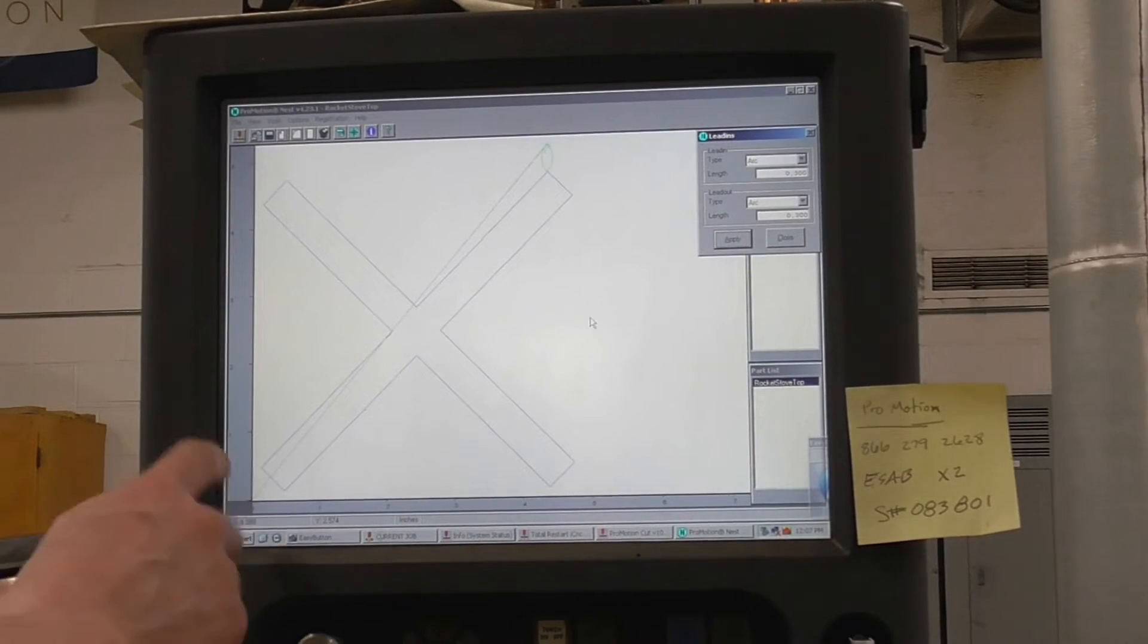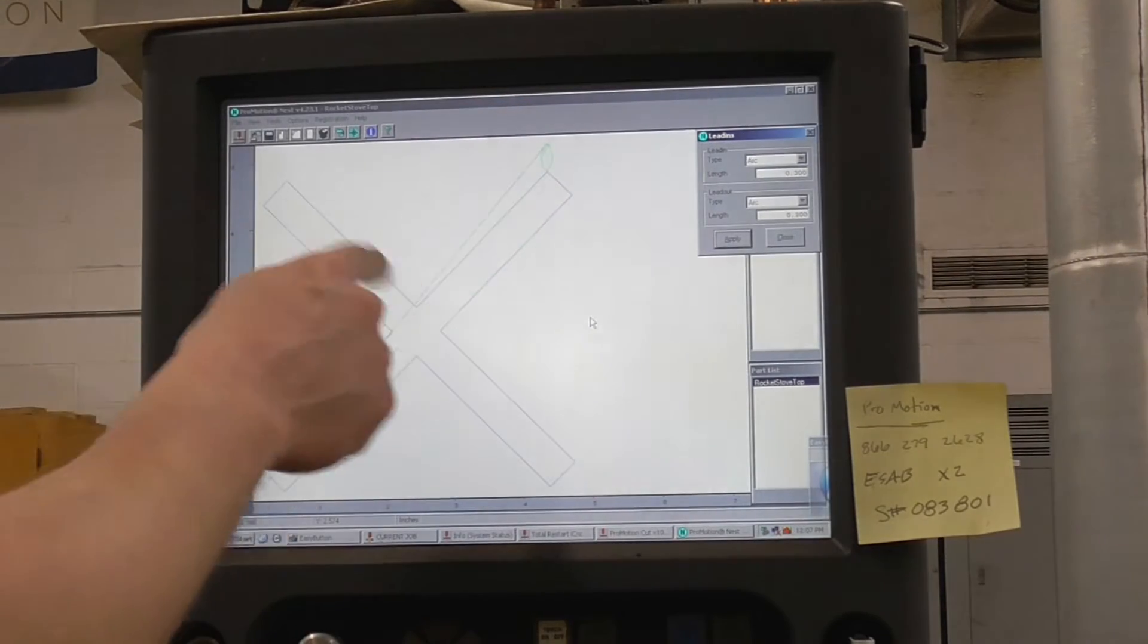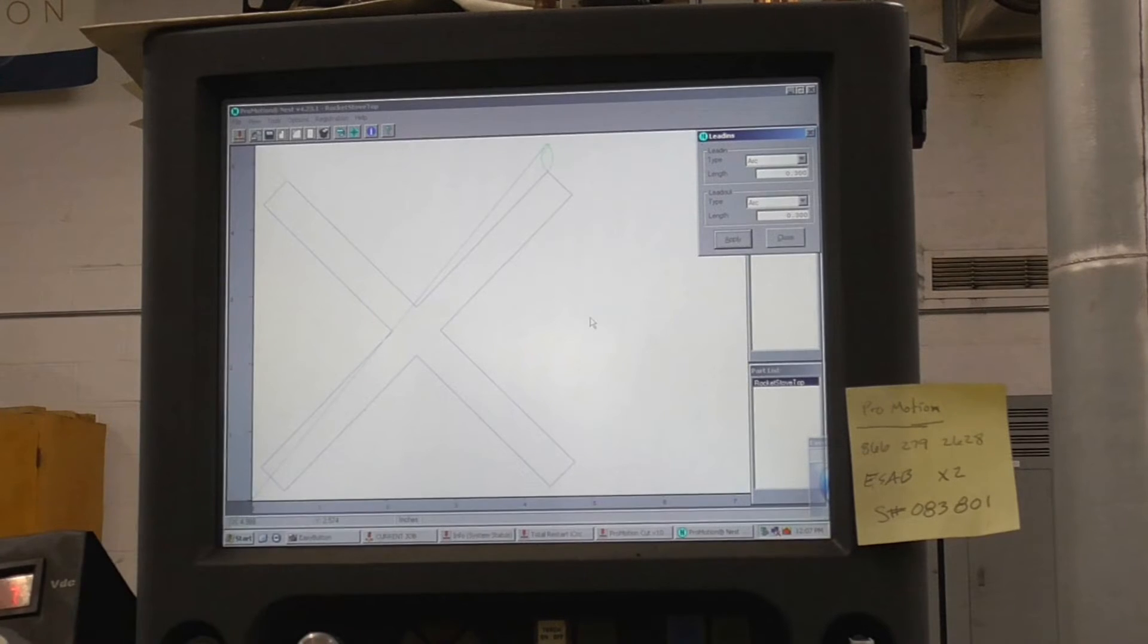Okay, so we just got back from the AutoCAD lab, and you can see this is 6 inches here. These are lead-ins right here, so it's going to pierce, lead-in, run around, and then lead out. So we're going to get this transformed into the cut path.